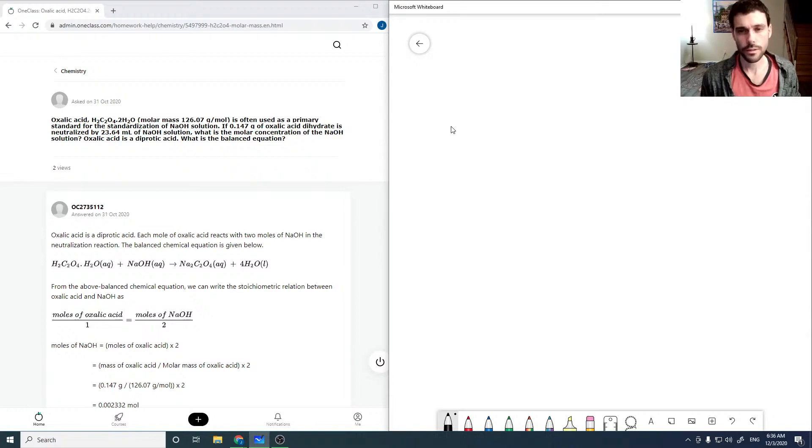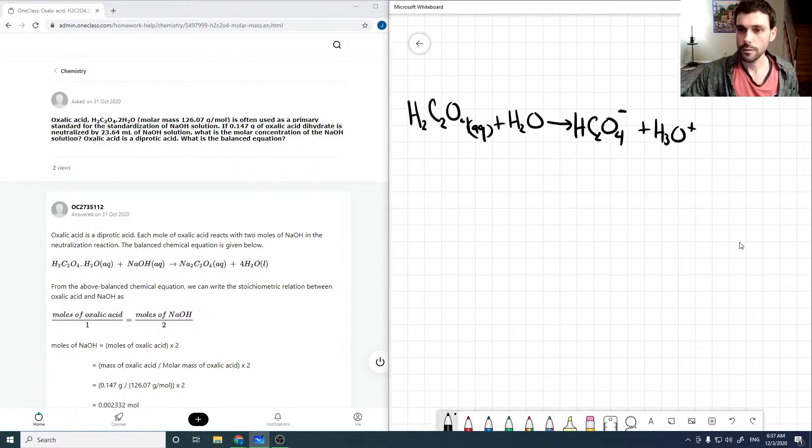So oxalic acid is going to dissolve into the solution, and if we add it with water, it's going to give us HC2O4 minus plus H3O plus. I'm just going to scroll that down a little bit.